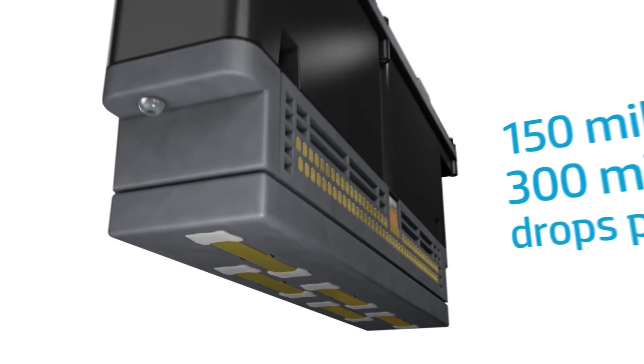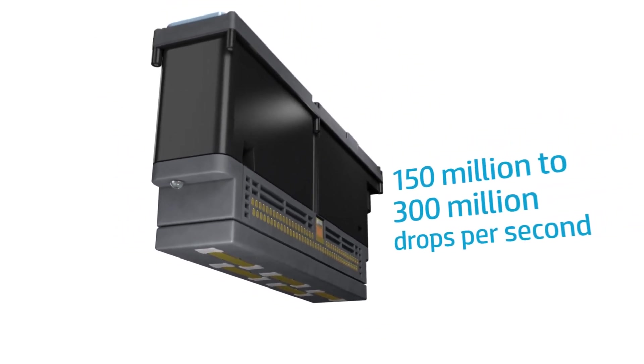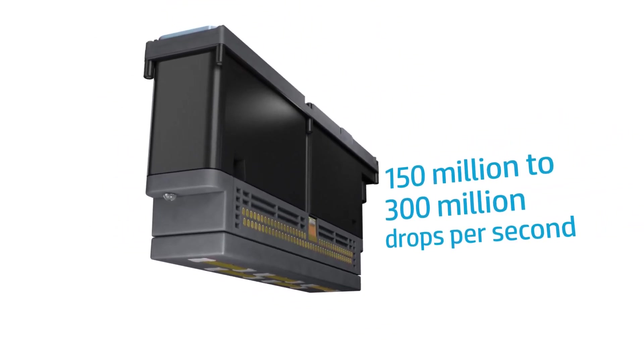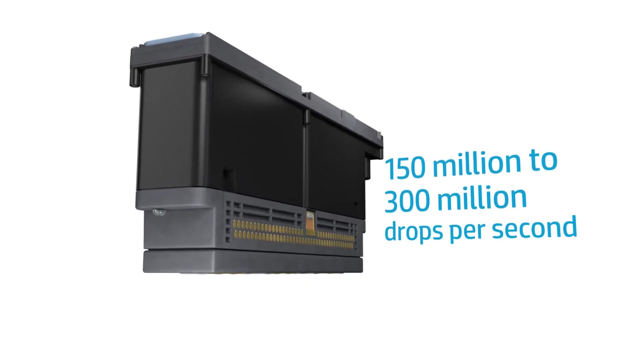As it is absorbed, the ink vehicle binds the pigments to the paper. This HP inkjet printhead can produce more than 150 million drops per second and some designs can produce more than 300 million drops per second.